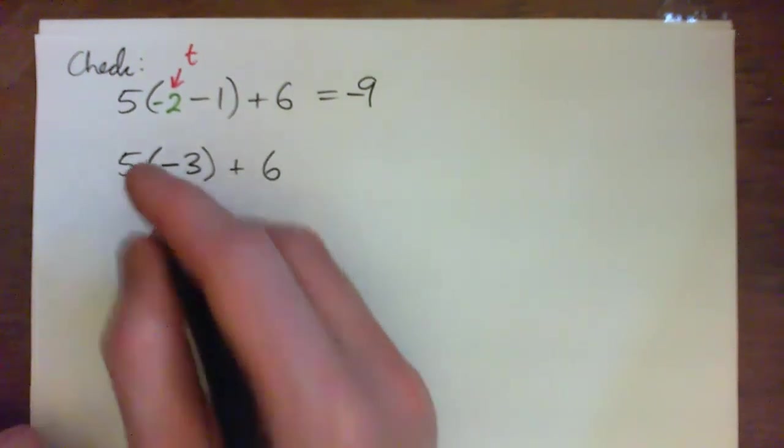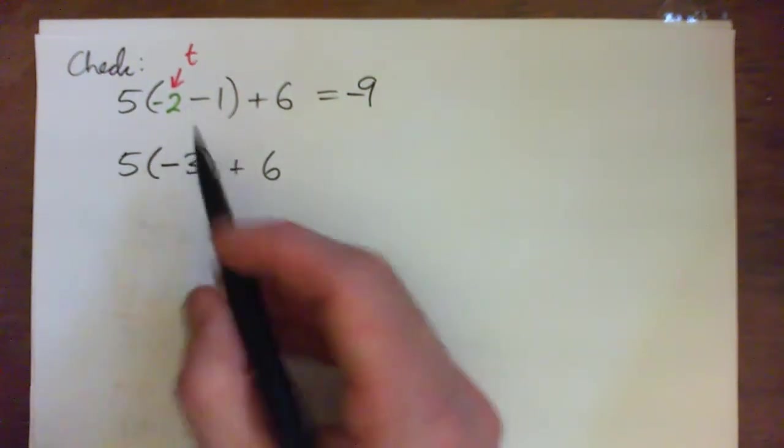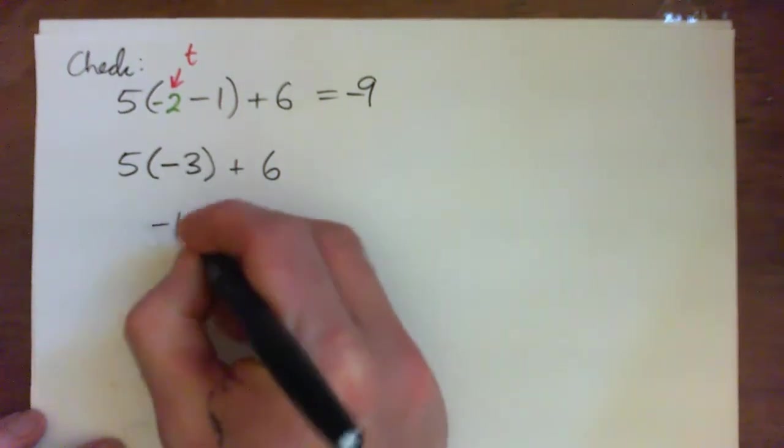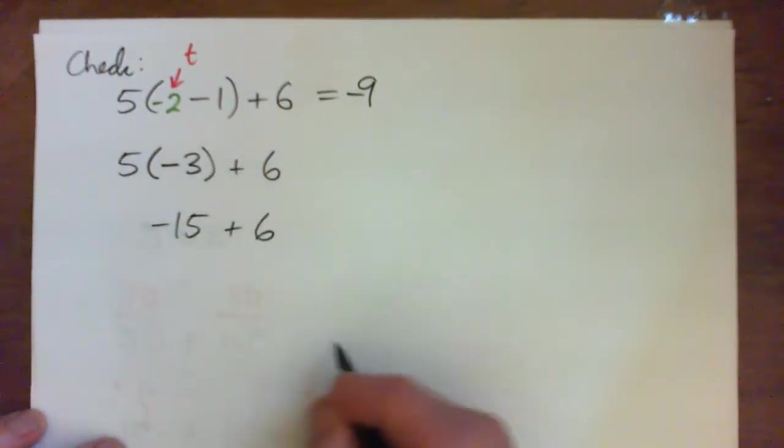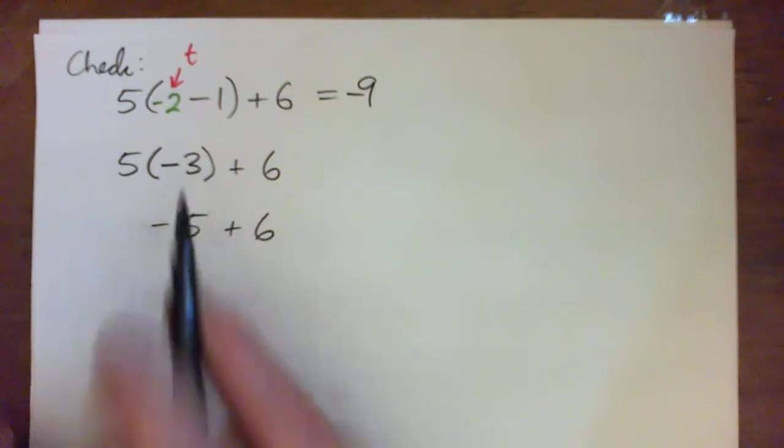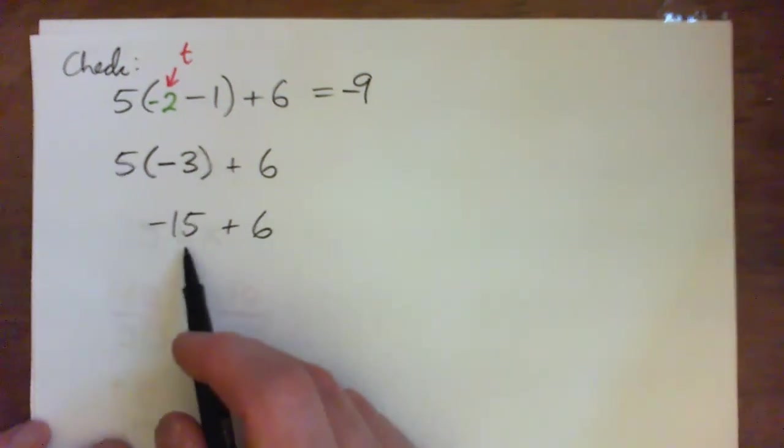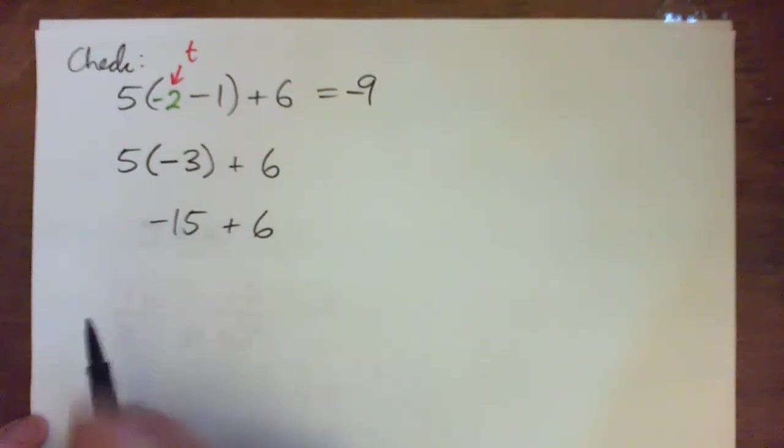If you take a debt of $3 and multiply it by 5 it becomes a debt of $15. Or 5 times 3 bad guys makes 15 bad guys. So negative 15 plus 6 is what?